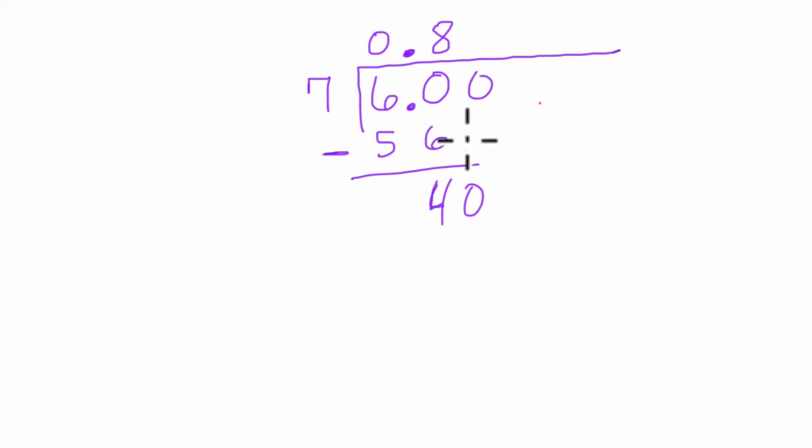And then, well, seven goes into 40. Not into four, but 40. We keep adding zeros to make this easier to think about. Well, seven goes into 40 five times because seven times 5 is 35. And 40 minus 35 is 5.